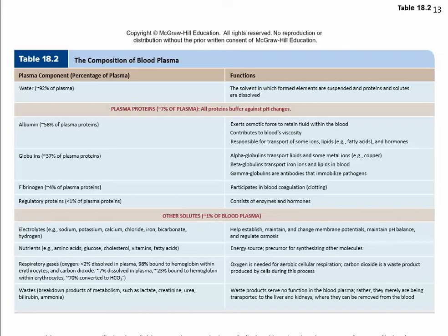Albumin shares its root with the word albino, which means white or colorless. It is called that because it is the main protein in egg whites. The chicken's liver produces a lot of albumin that goes into the blood and ends up in the egg, so egg whites are almost pure albumin.